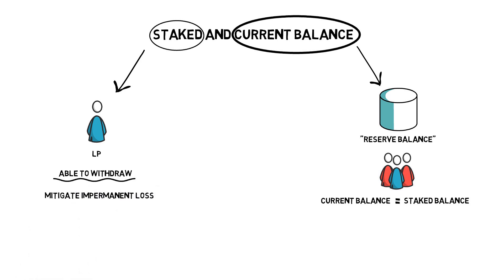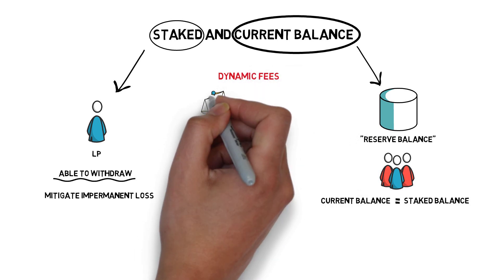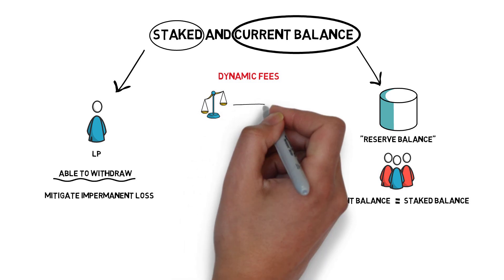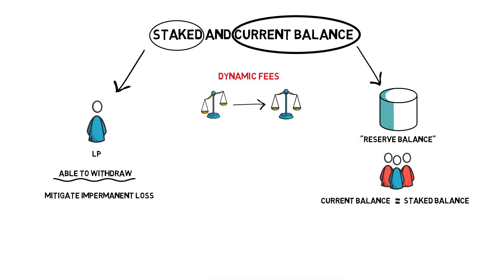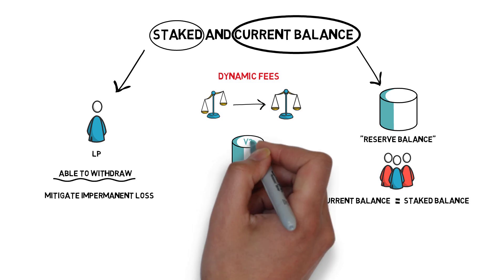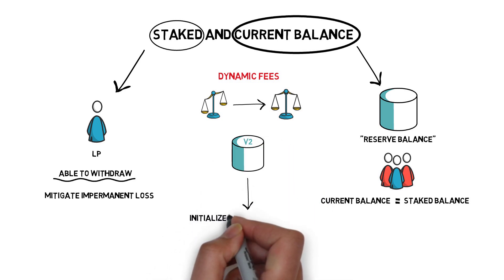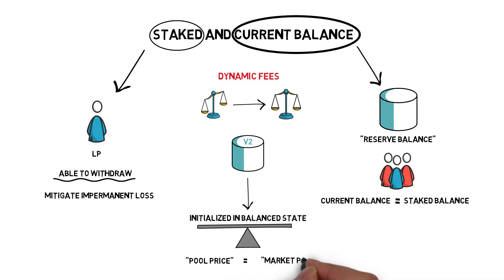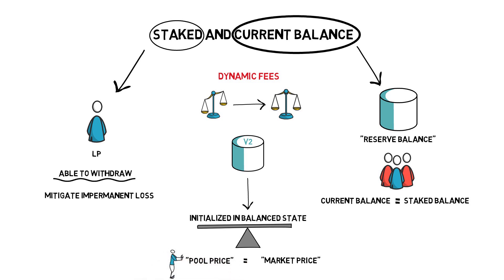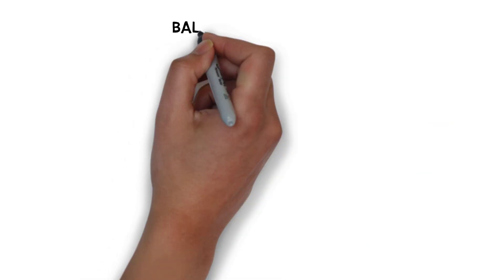One of the ways to achieve this is by using dynamic fees. If the current balance diverges from the staked balance, fees can be adjusted to incentivize market participants to bring both balances closer together. A V2 pool is always initialized in a balanced state so that the pool price is equal to an external reference market price provided by price oracles. The V2 pools are designed to always push the pool price to equal the market price.